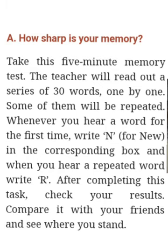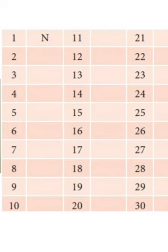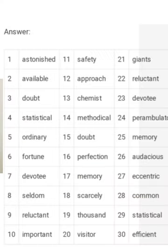Take this 5-minute memory test. The teacher will read out a series of 30 words one by one — some of them will be repeated. Whenever you hear a word for the first time, write N for new in the corresponding box. When you hear a repeated word, write R. After completing this task, check your results, compare with your friends, and see where you stand.